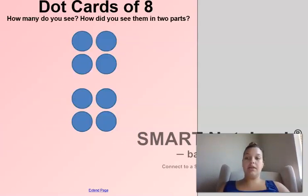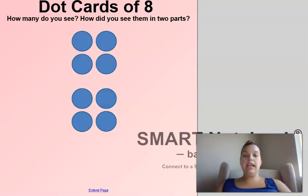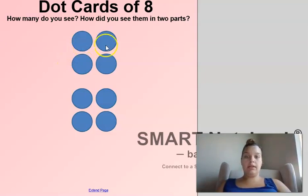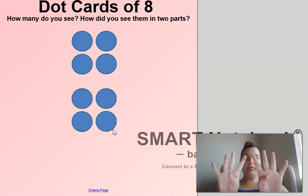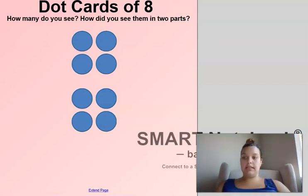First off, we're going to start with dot 8 cards. And I want you to tell me how many dots you see. 8. I see 8. My brain subitized it into 2 parts. I have a group of how many here? 4. 1, 2, 3, 4. How many do I have down here? 1, 2, 3, 4. 4 and 4 is 8.